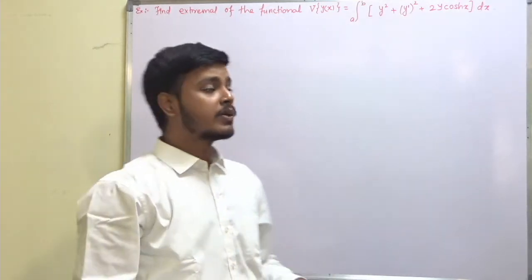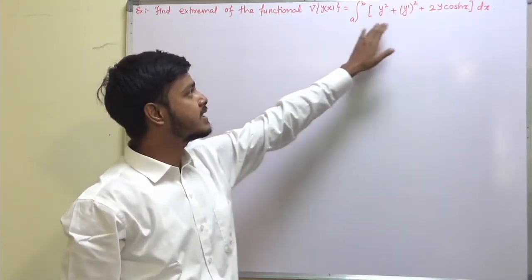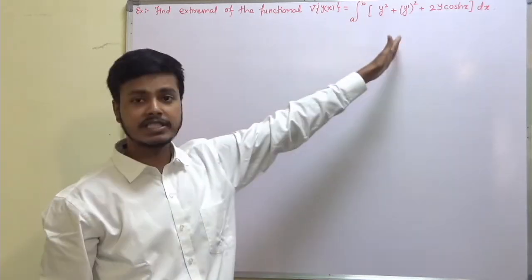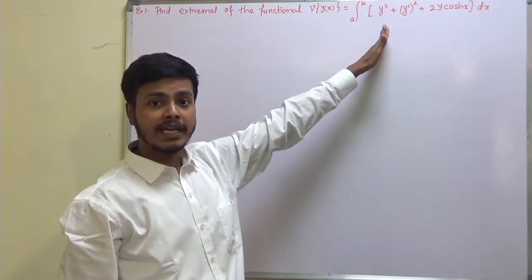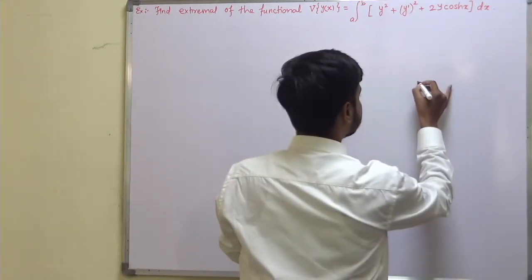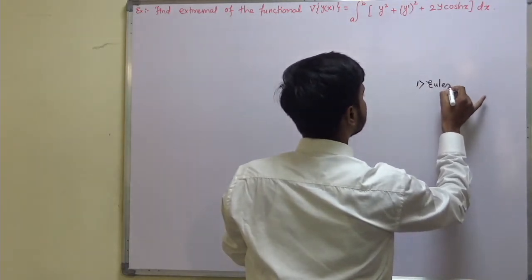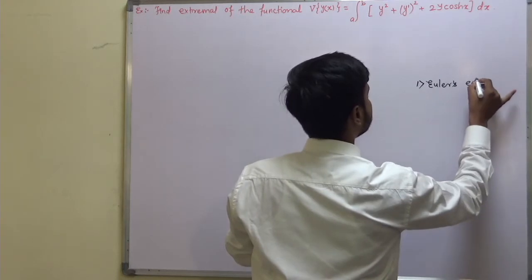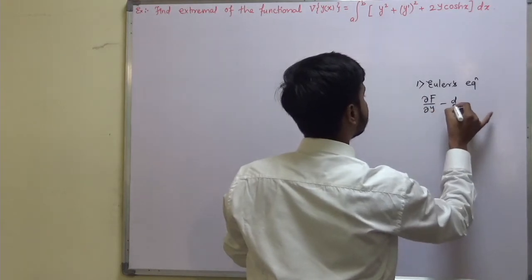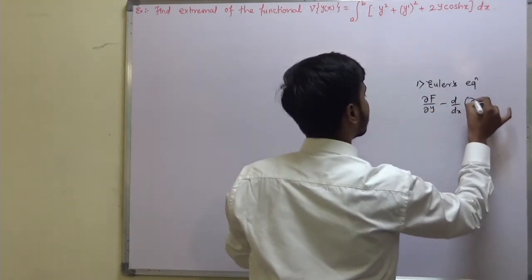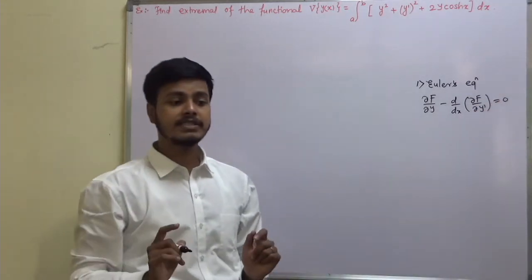The problem says: find the extremal of the functional v of y(x). To get the extremal of this functional, you need to remember Euler's equation, which is: del f by del y minus d/dx of del f by del y-dash is equal to 0.